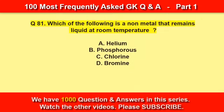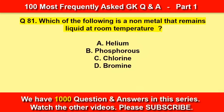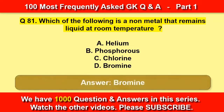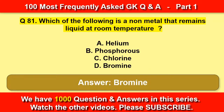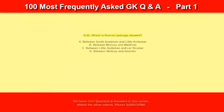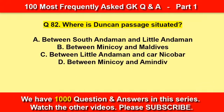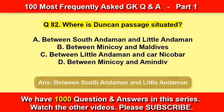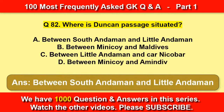Which of the following is a non-metal that remains liquid at room temperature? Bromine. Where is Duncan Passage situated? Between South Andaman and Little Andaman.